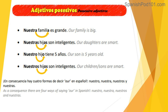'Nuestras hijas son inteligentes.' Our daughters are intelligent. In this case, 'hijas' is in the plural feminine form, so we say 'nuestras.' Next: 'Nuestro hijo tiene cinco años' — our son is five years old. We say 'nuestro' because 'hijo' is masculine and singular.